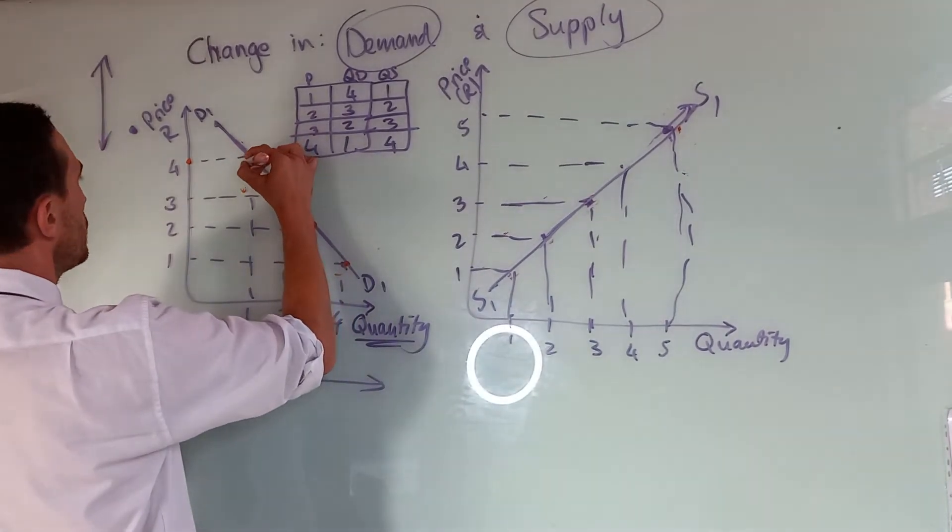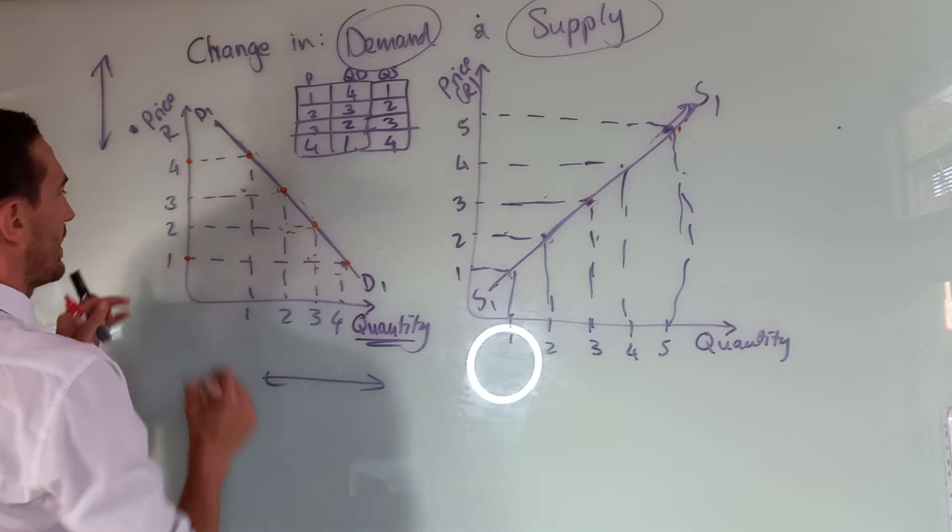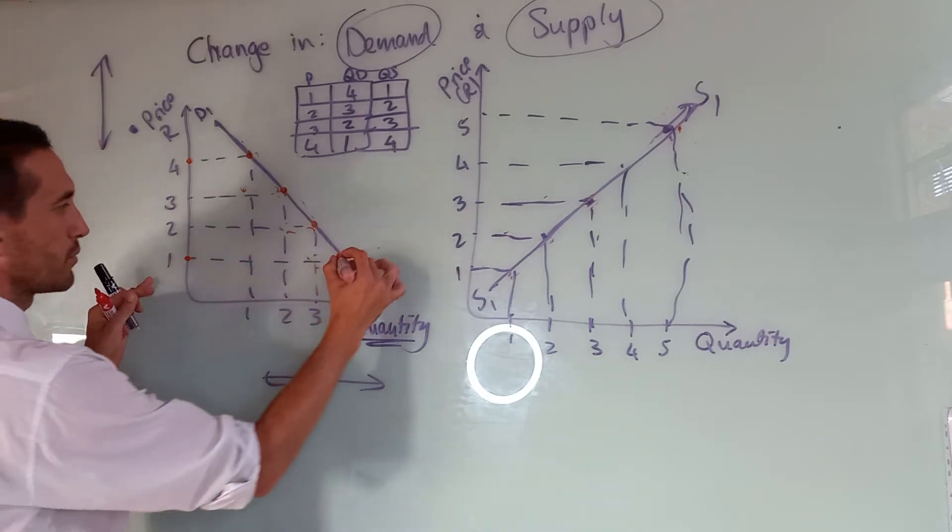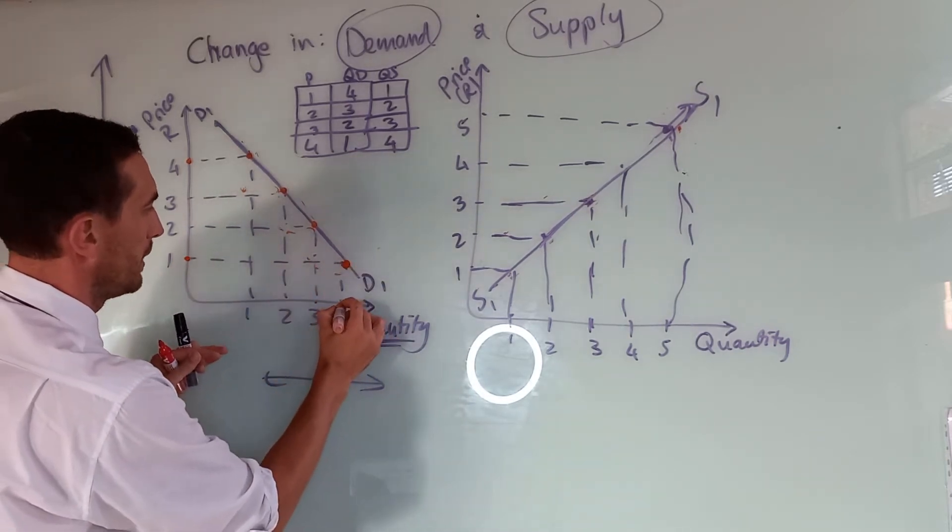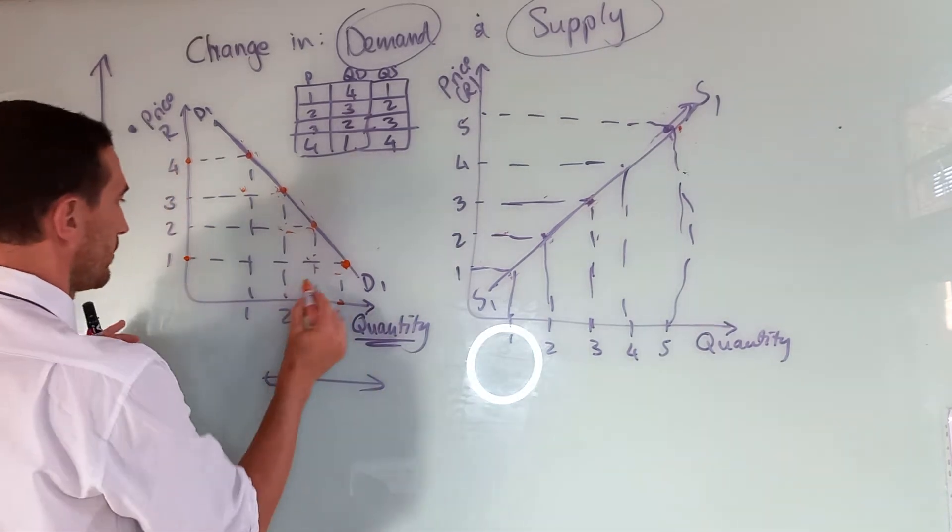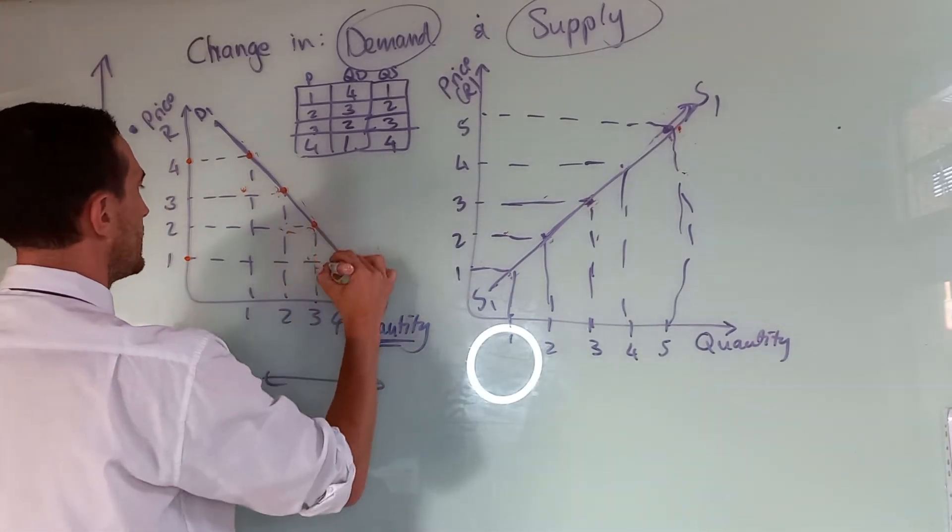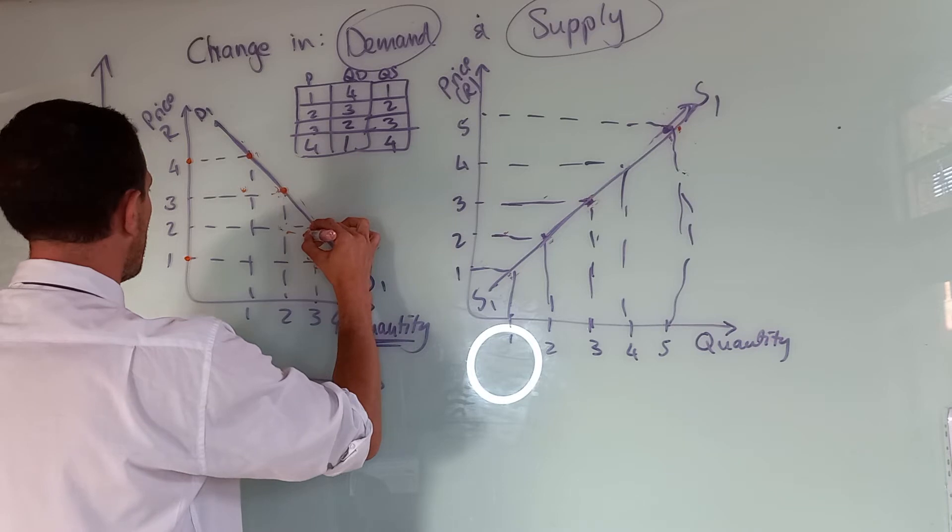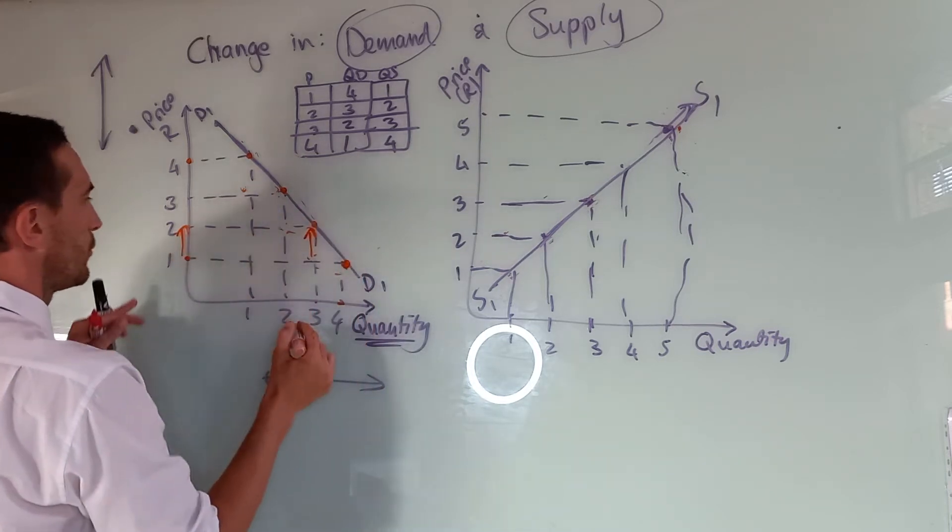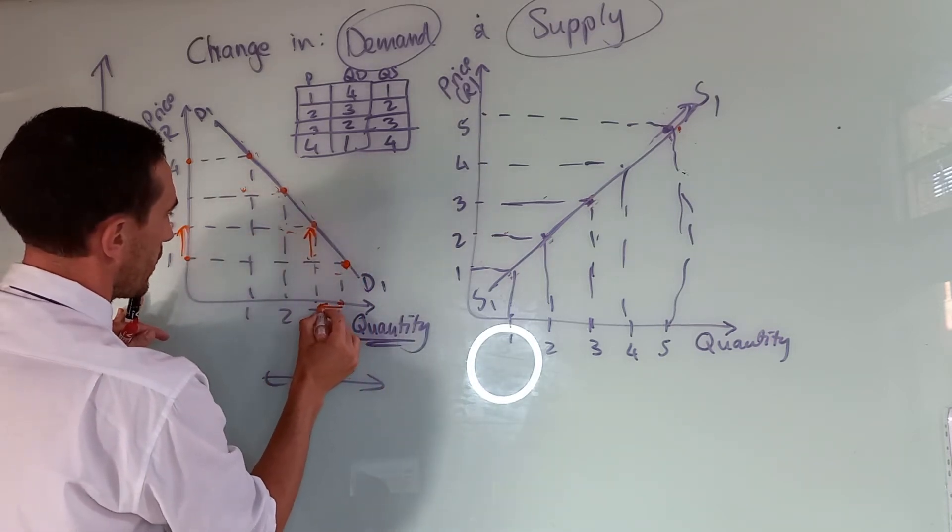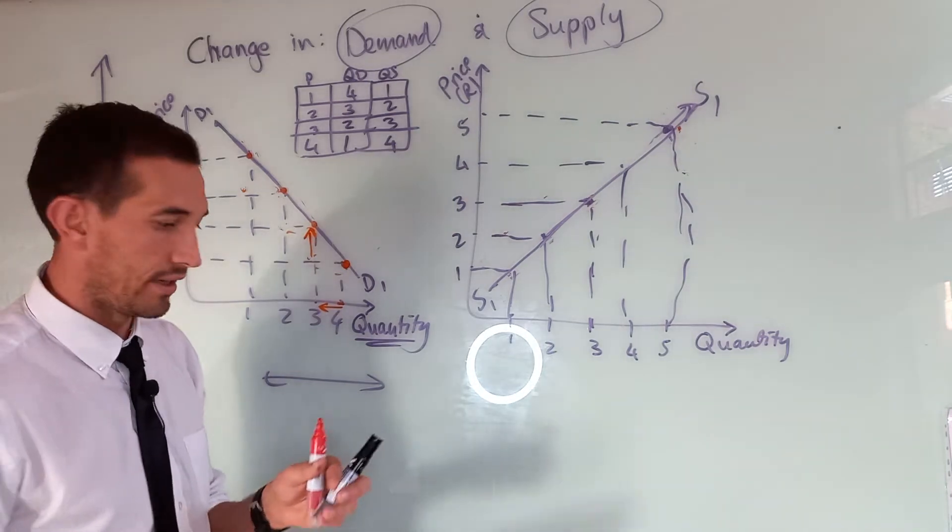Let's say I would start at one rand. If my product costs one rand, the demand for a product would be four units. We all agree on that. But now I want to increase my price. So what happens from one rand to two rand? My quantity demanded will change.